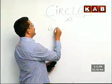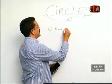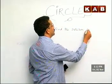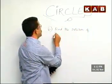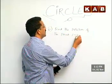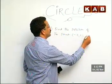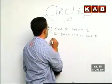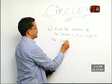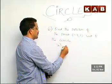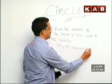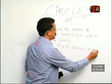Find the position of the point minus 3, 1 with respect to the circle x squared plus y squared minus 3x minus 4y minus 8 equals 0.